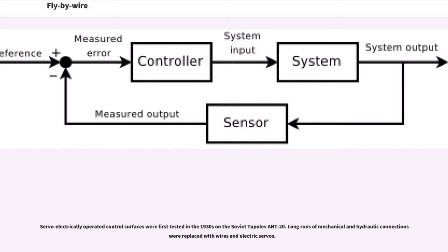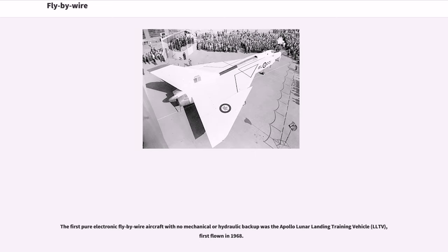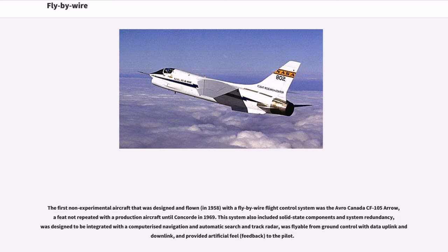Long runs of mechanical and hydraulic connections were replaced with wires and electric servos. The first pure electronic fly-by-wire aircraft with no mechanical or hydraulic backup was the Apollo Lunar Landing Training Vehicle (LLTV), first flown in 1968. The first non-experimental aircraft designed and flown with a fly-by-wire flight control system was the Avro Canada CF-105 Arrow in 1958, a feat not repeated with a production aircraft until Concorde in 1969.